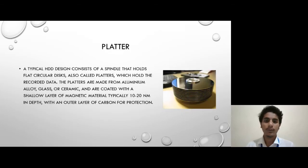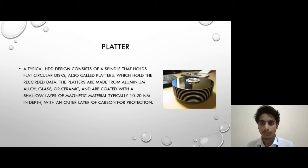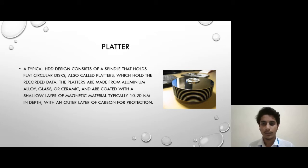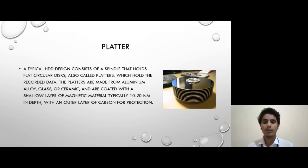The disk inside the hard disk is known as a platter. A typical hard disk design consists of a spindle that holds flat circular disks, also called platters, which hold the recorded data. The platters are made from aluminum alloy, glass, or ceramic and are coated with a shallow layer of magnetic material, typically 10 to 20 nanometers.